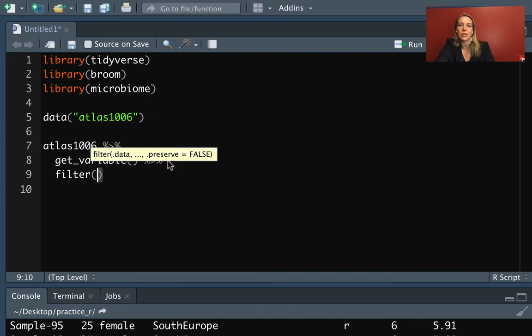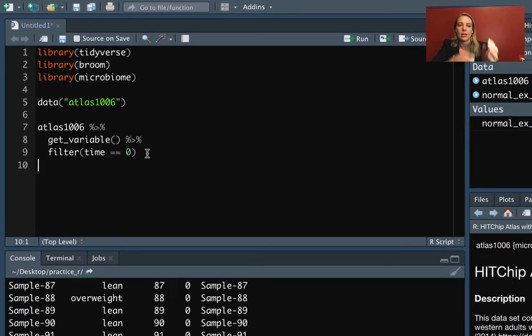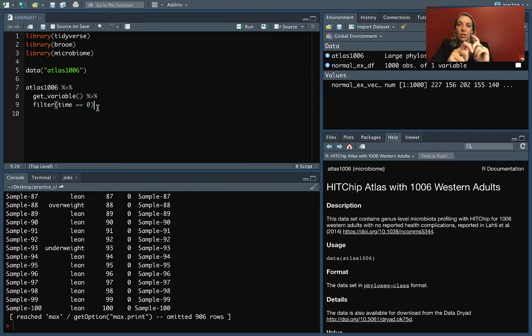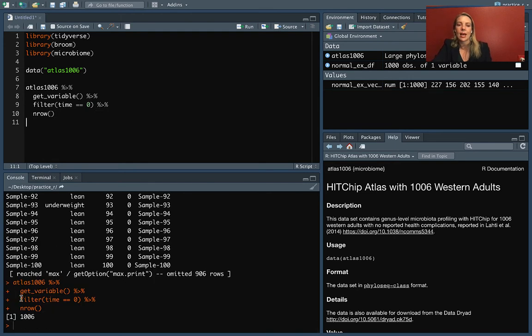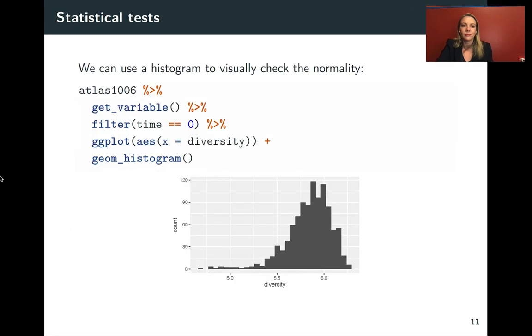It said that this was measurements on 1006 people, but it's got over 1100 rows. That's because we've got these different sample times. We can filter down to just places where this time is equal to zero, and then we'll be getting for everybody the measurement for their first time point. Now that we've gotten this as a data frame, we can do the different functions from tidyverse like filter. We can use nrow and see now that we've got 1006, which is what it tells us for the number of study subjects.